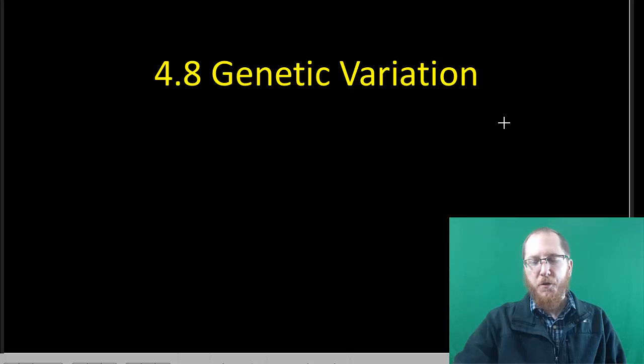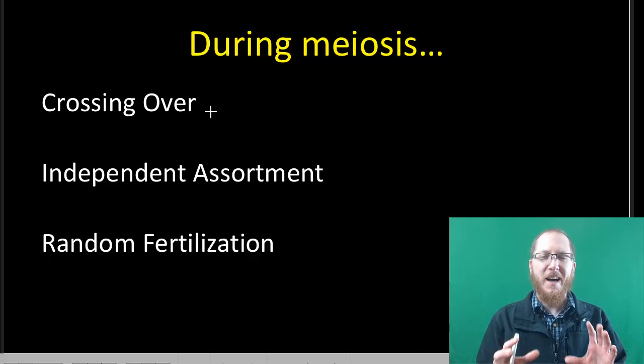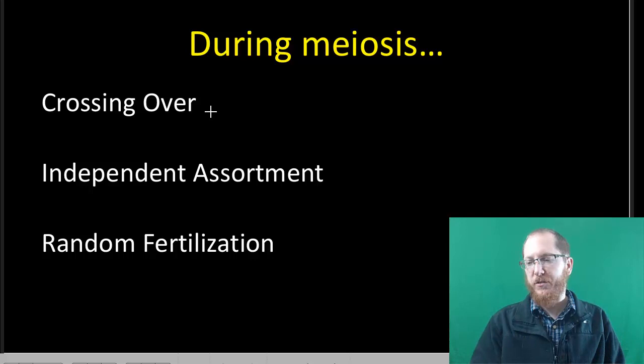Welcome to section 4.8 and 4.9. So 4.8 is going to talk about how we get genetic variation from essentially meiosis and sexual reproduction. There are three events that are going to happen during meiosis itself or right after when you go through the fertilization process.